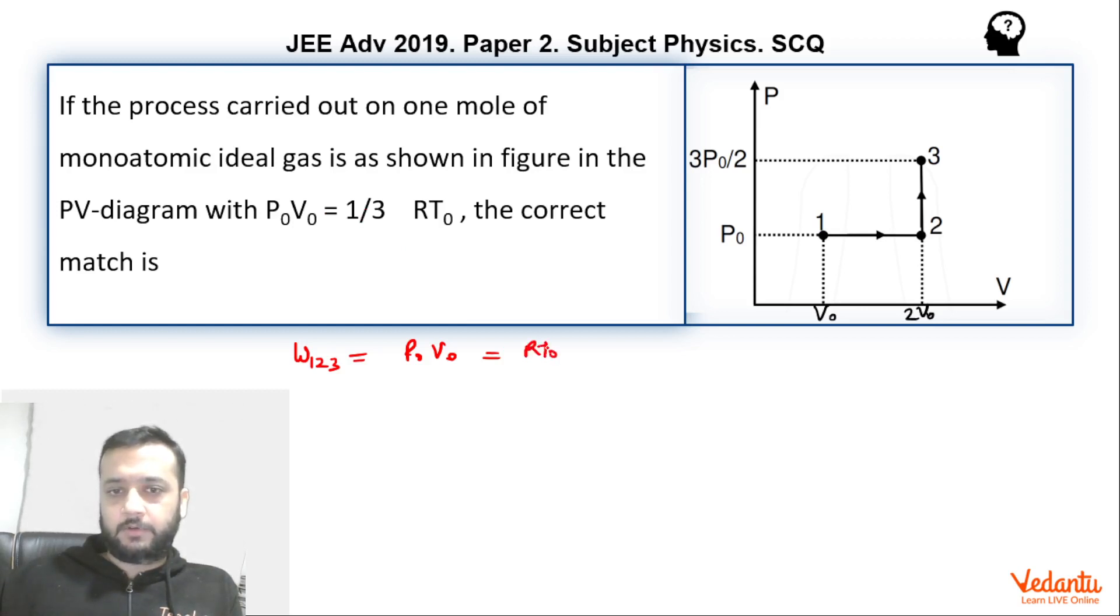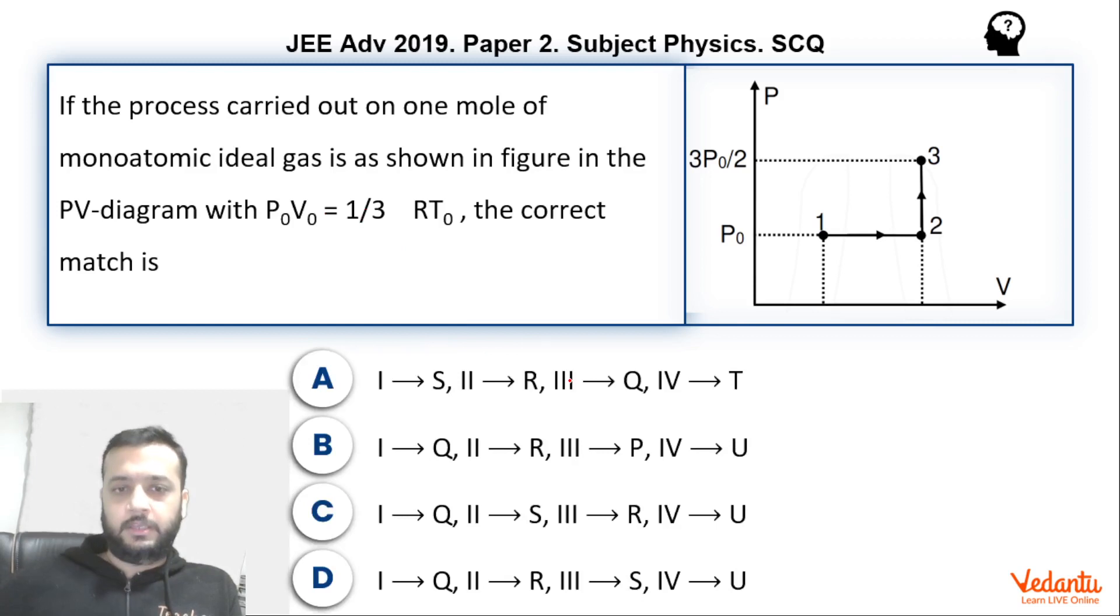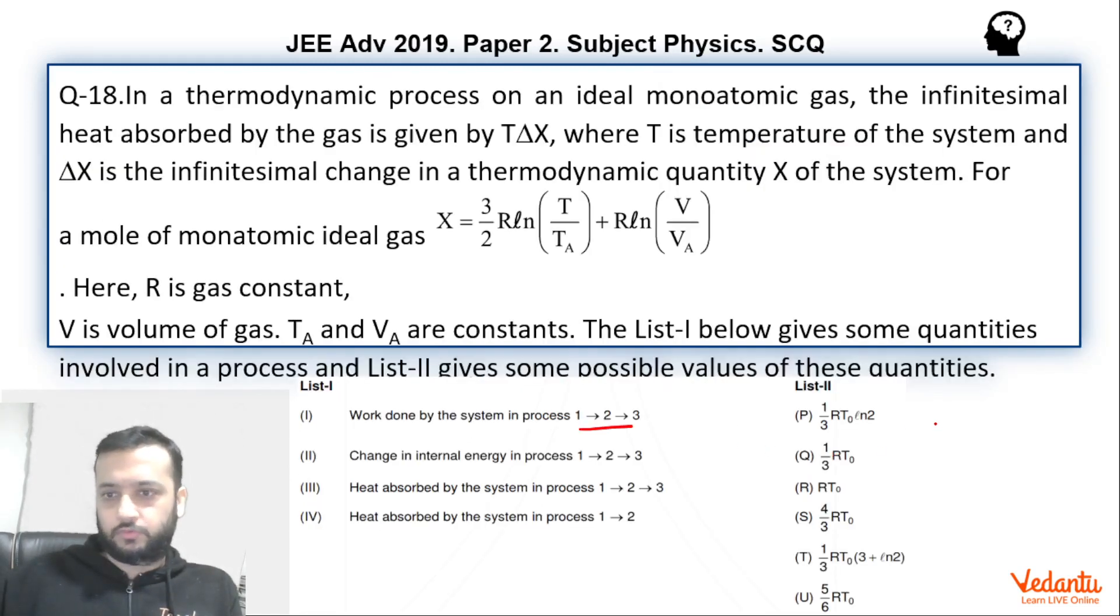So this will become RT0 by 3. So this matches with Q. So 1 matches with Q.